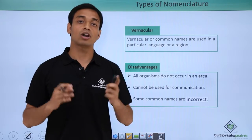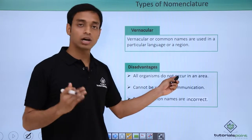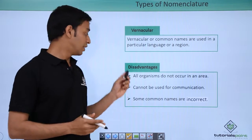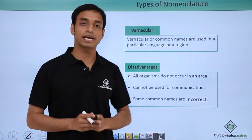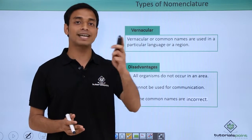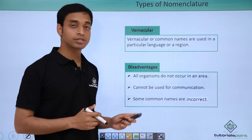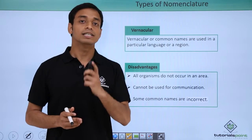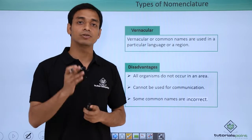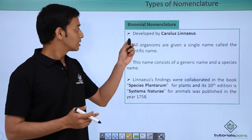Vernacular names have a lot of disadvantages. First, all organisms cannot occur in a particular area, so we cannot expect to find 1.8 million species in one place. Second, vernacular names cannot be used for communication in the scientific world — for example, a mango name in an Indian local language may not be understood by scientists in other parts of the world. Third, some common names are incorrect; for example, jellyfish and silverfish are called fishes but actually belong to different phyla and share very few similarities with true fishes.